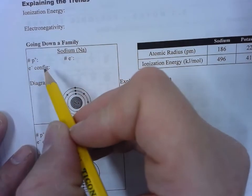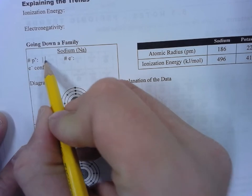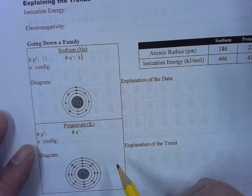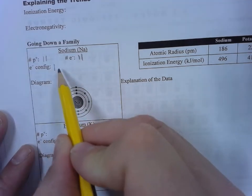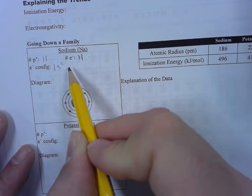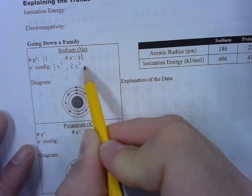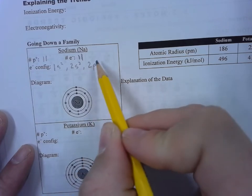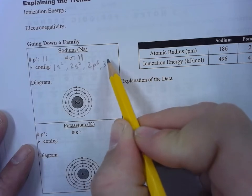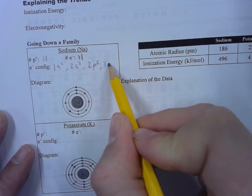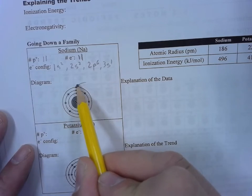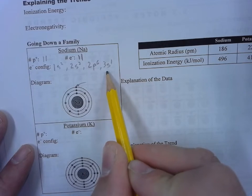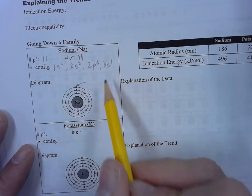In sodium, the number of protons is 11. The number of electrons is also 11. The electron configuration is 1s2, 2s2, 2p6, and 3s1. That's that one right there. We're in the third row, we call it the third shell.